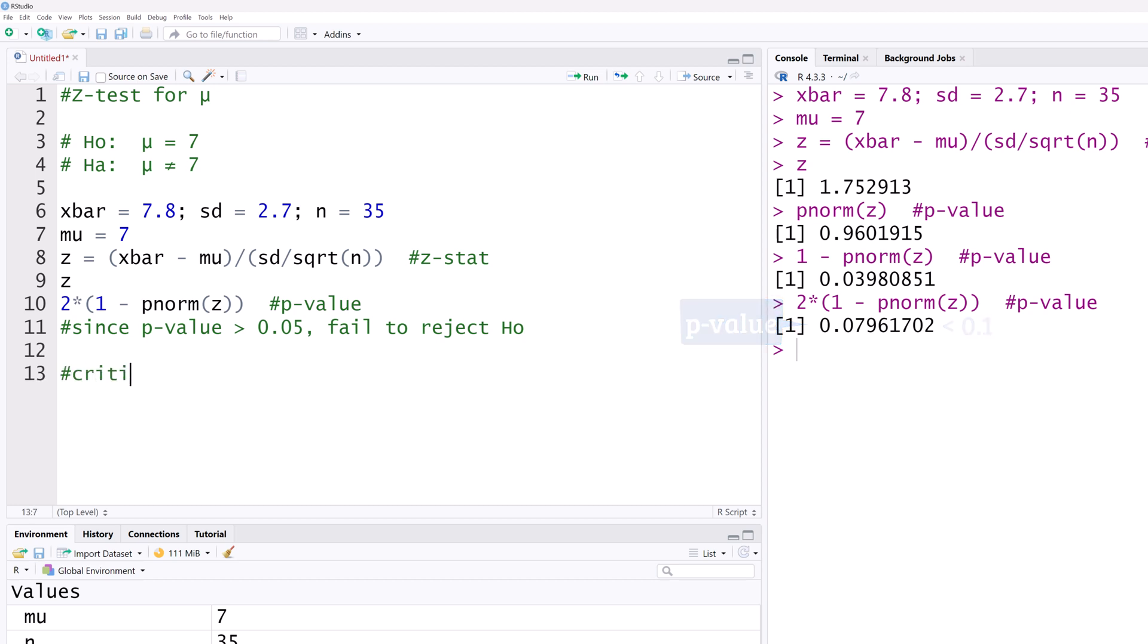Now, suppose we decide to use the critical value, or region approach for significance at alpha equals 0.05. We can use the QNORM function to obtain the Z critical values. We will use QNORM 0.05 over 2 to divide the alpha value into the two tails.